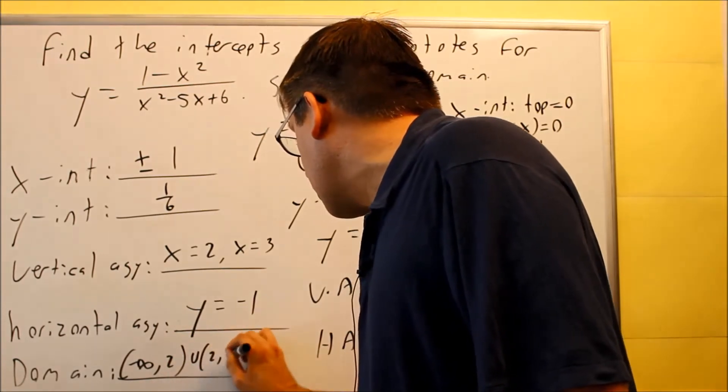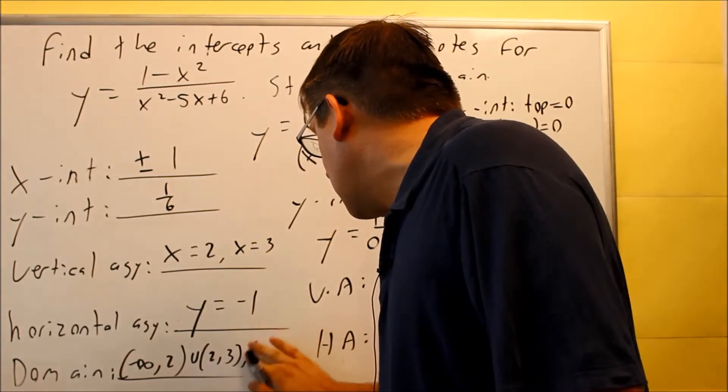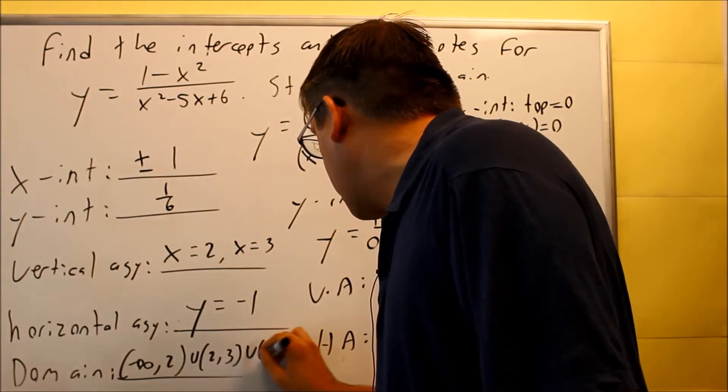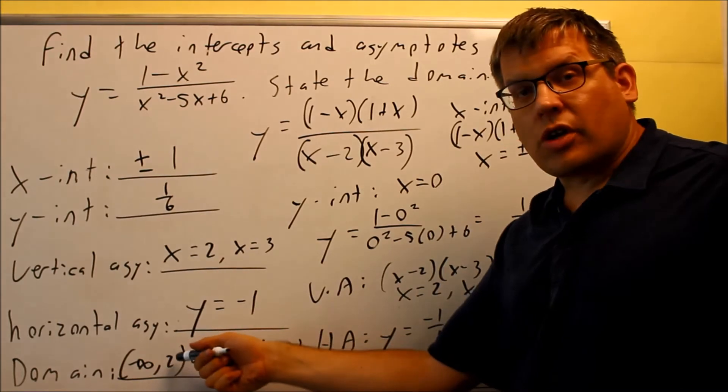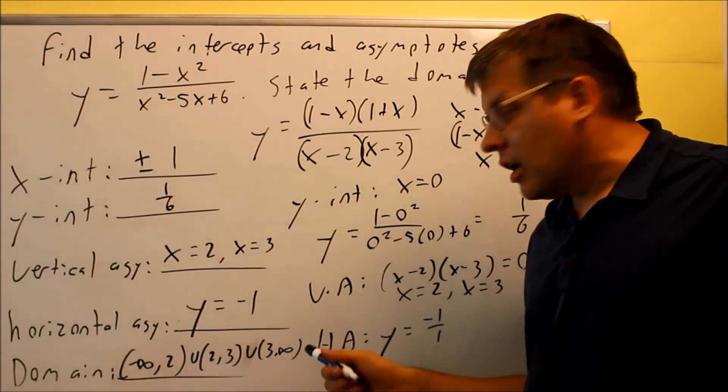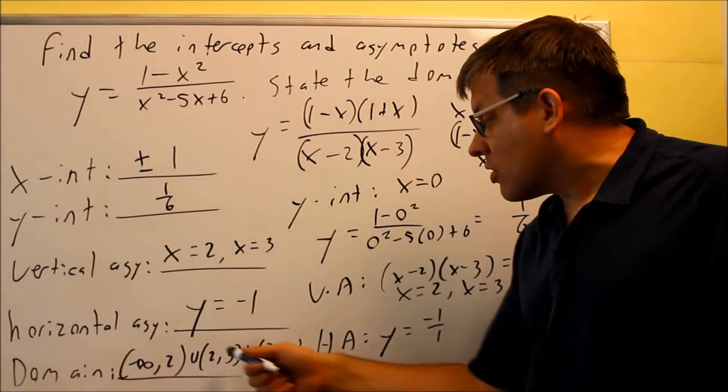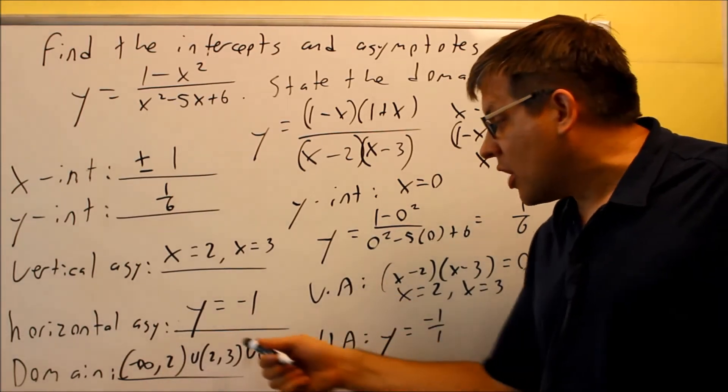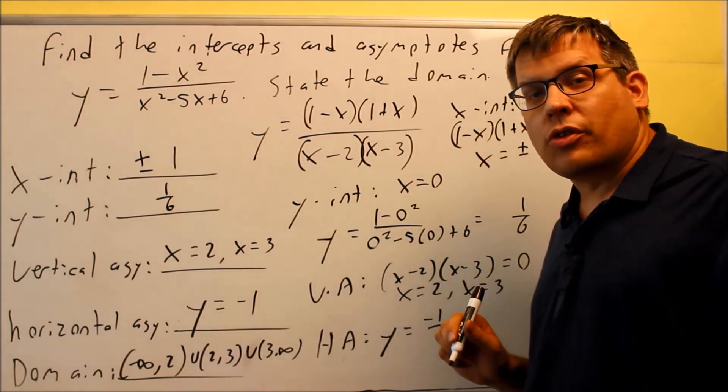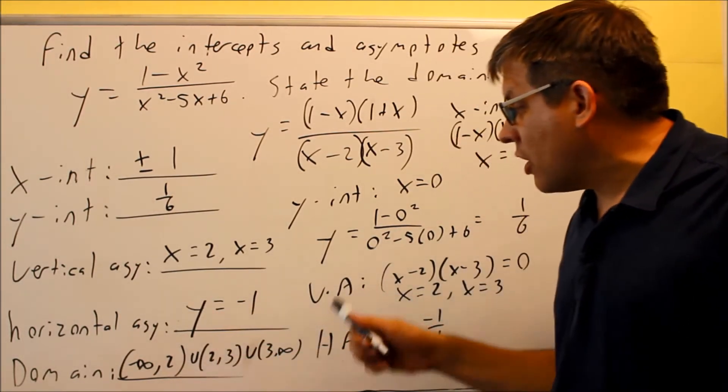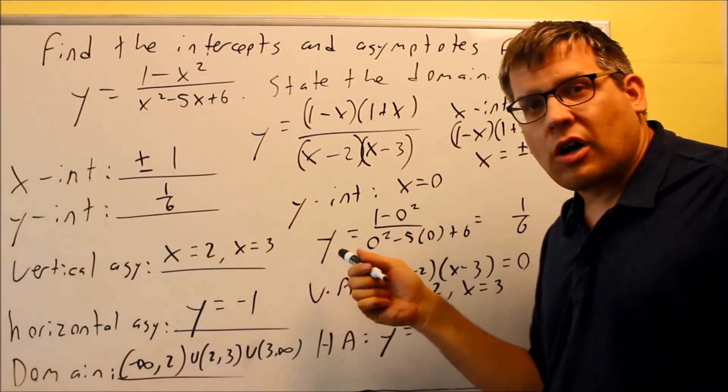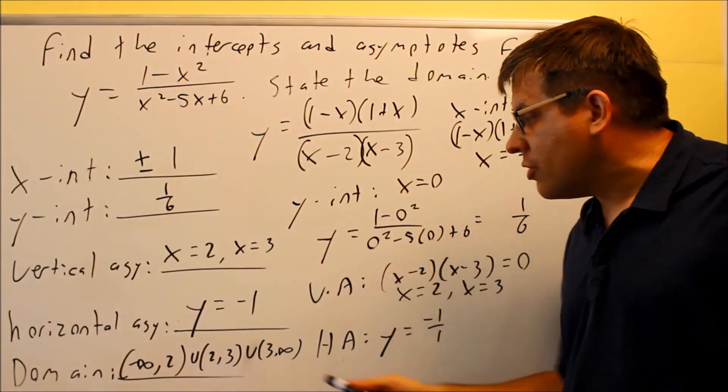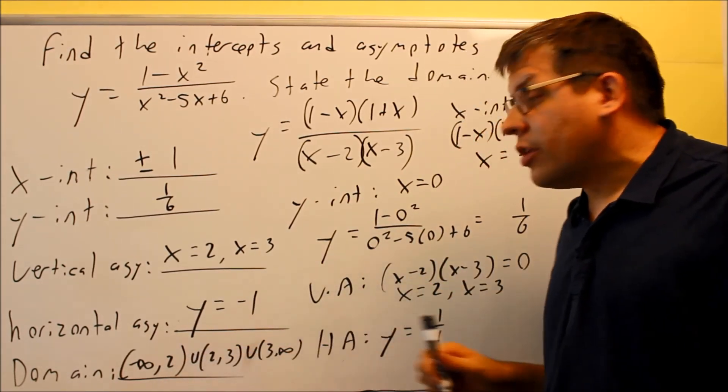And then from 2 to 3. And then the union there, not a comma. And then we're going to have from 3 to infinity. Everything before the 2 is okay. Between 2 and 3 is okay. After 3 is okay. It's just that we're not including 2 and 3 itself, and that's why we have parentheses on both of those. That would be your domain. So again, domain always goes along with your vertical asymptotes. Wherever the vertical asymptotes are, those numbers are not included in your domain. That's why they're not included down here.